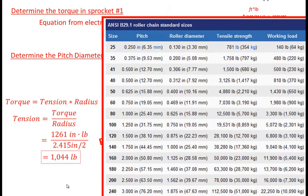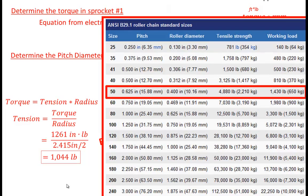If we look at the table in the brain book and focus on ANSI number 50 chain, we will see that the working load limit for this size chain is 1,430 pounds. Since we only expect a maximum tension of 1,044 pounds in the chain, we are okay using this size of chain.